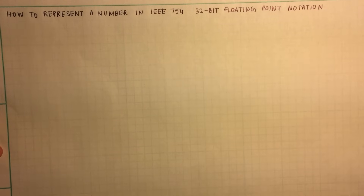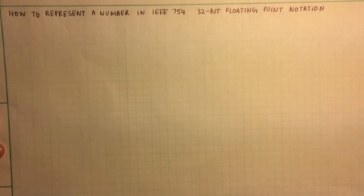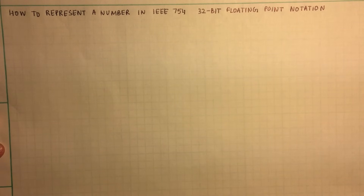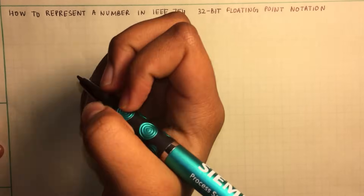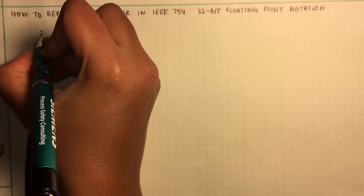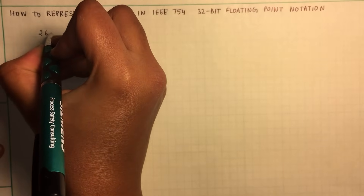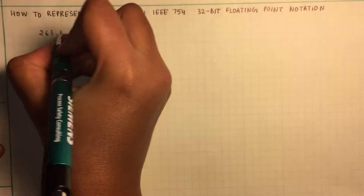Howdy, my name is Abhishalini and I'm here to explain how to represent a number in IEEE 754 32-bit floating point notation. I'm going to consider the following number for an example: 263.3.